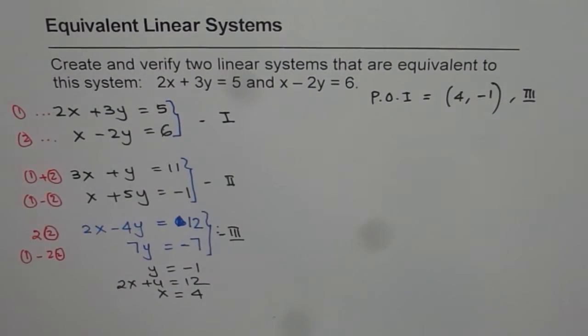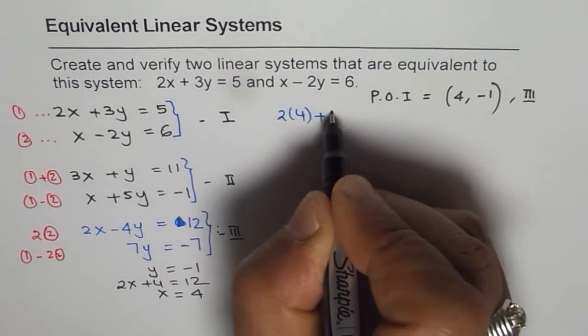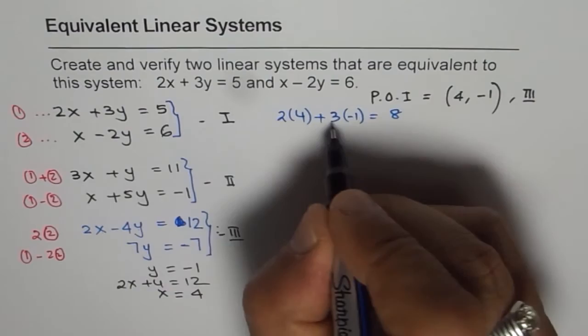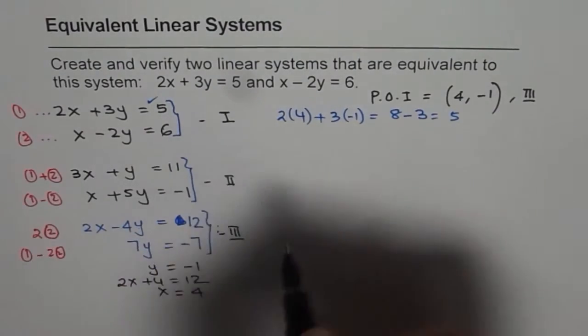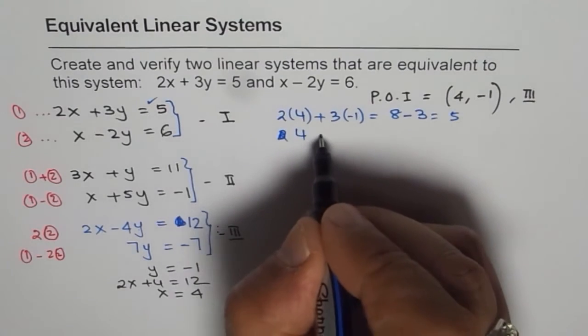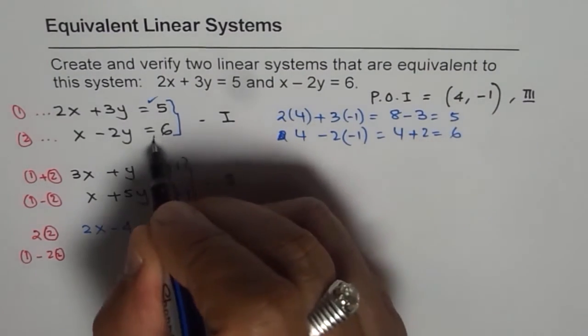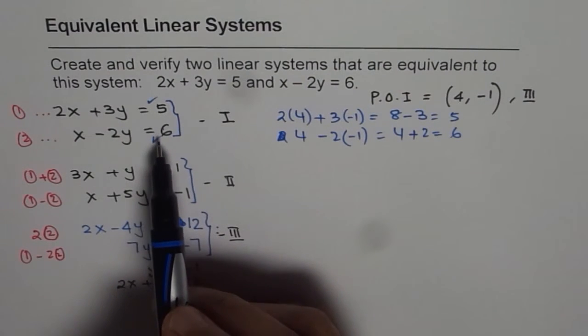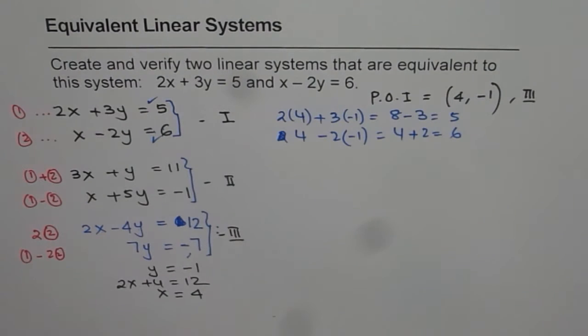4 minus 1. If I write 4 for x, I get 2 times 4 plus 3 times minus 1. 2 times 4 is 8 and 3 times minus 1 is minus 3. That gives us 5, correct? Let us check with the second one. It is 4 minus 2 times minus 1. So it is 4 plus 2, which is 6. So it works. The same point of intersection works for the first set of linear systems. That means these two are equivalent linear systems.